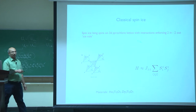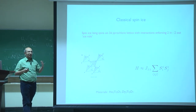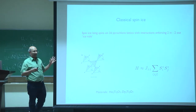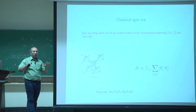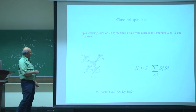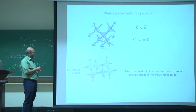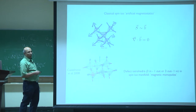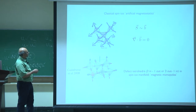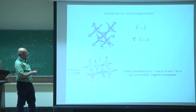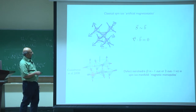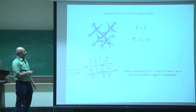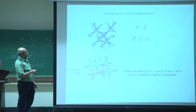The leading terms of the Hamiltonian don't give a unique ground state but rather an infinite number of degenerate ground states — a degenerate manifold. The physics is determined by fluctuations within this manifold. How should we think about this? There's a nice representation: think of the vector spin as a vector magnetic field B, and the two-in-two-out ice rule is then equivalent to the constraint that the divergence of this vector field is zero.